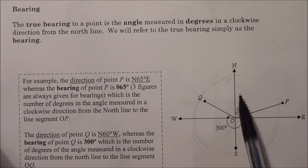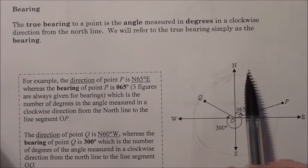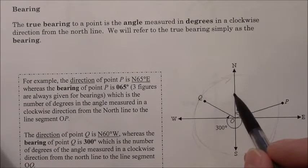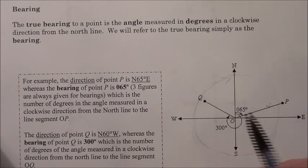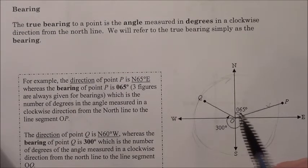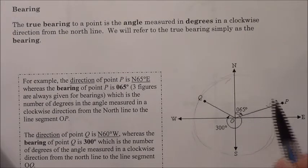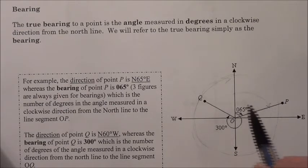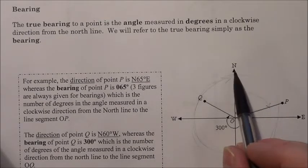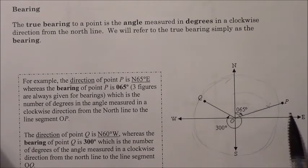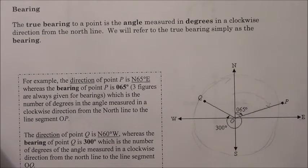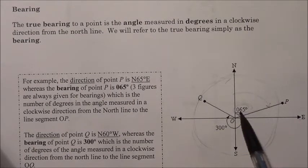If we look at point P, starting north and rotating clockwise down to line segment OP, that angle of rotation is 65 degrees. The cardinal direction would be north 65 degrees east, because it's 65 degrees towards the east. For the bearing, that would just be 065 degrees — you need the leading zero, you need that third figure when you write it.